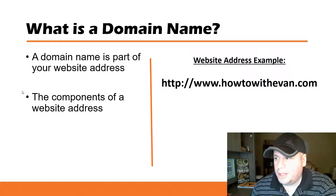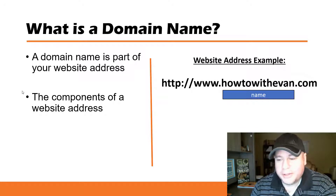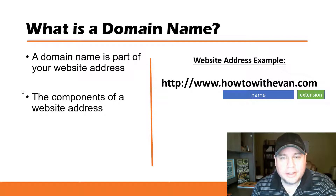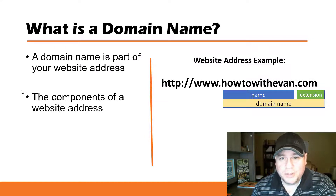Here's an example of a website address — my website address, HowToWithEvan.com. There are different components that make up this address. First, the name: HowToWithEvan. Then the extension: .com. This could come in many different extensions like .net, .org, or .biz, but .com is the most popular. Both the name and extension together make up the domain name.